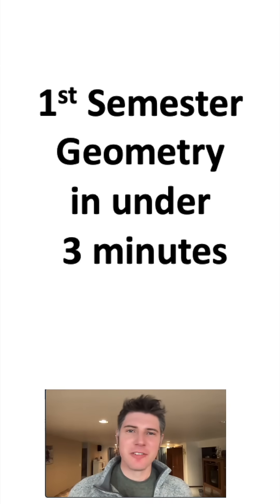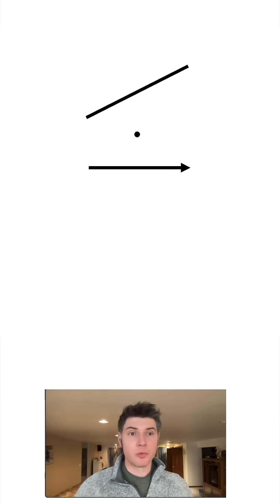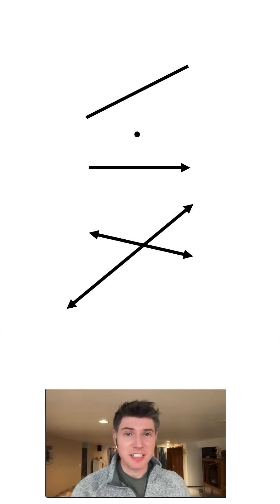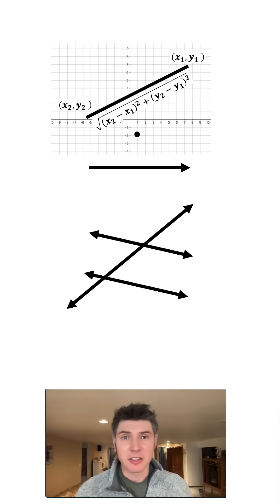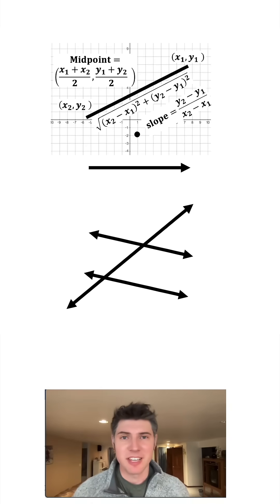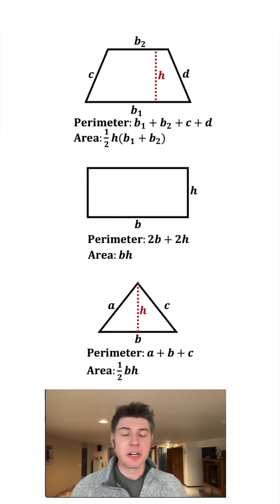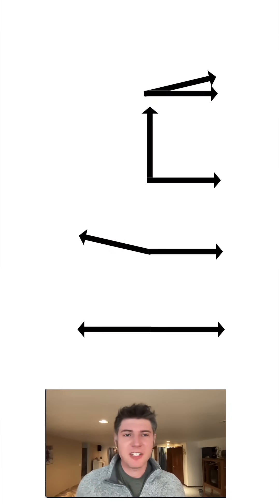Let's do the highlights of first semester geometry in three minutes. We start by getting points, segments, rays, and lines. We can have intersecting lines or parallel lines. Make it a coordinate grid, an xy coordinate. Add endpoints and we can use formulas to find the length, the midpoint, or the slope of the segment. Once we know lengths, we can find perimeter and area of all different kinds of shapes.